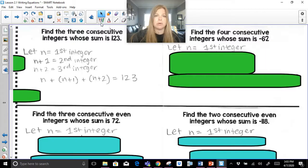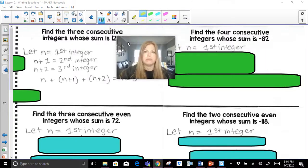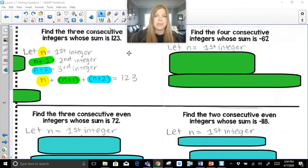...the second integer plus the third integer should equal 123. And just to make sure you see where all of these are coming from, I'm going to color code for just a moment. So n is my first integer. Then n plus 1 is my second. And then n plus 2 is my third. And if I add all three of those up, it should give me the sum of 123.